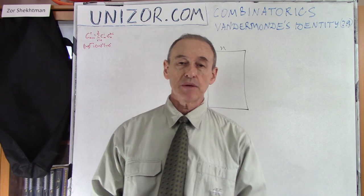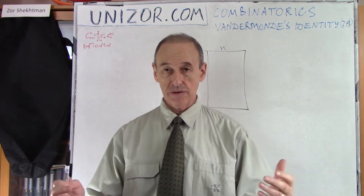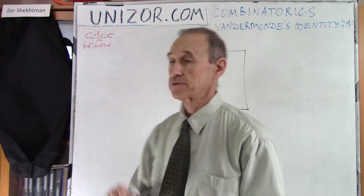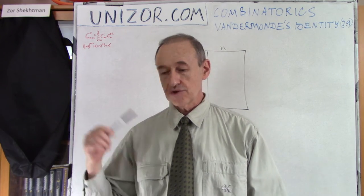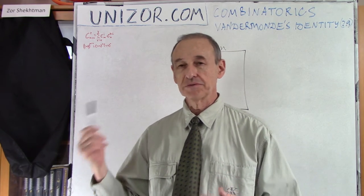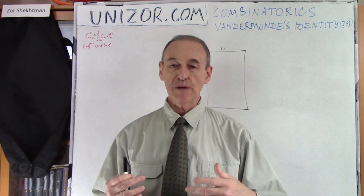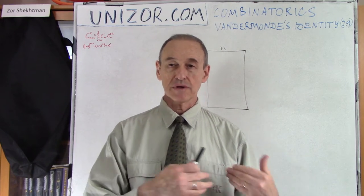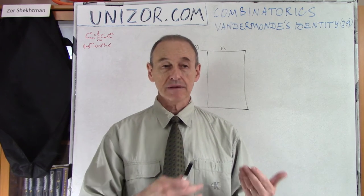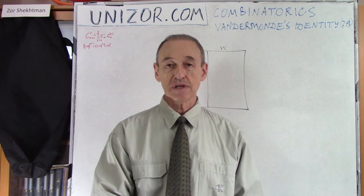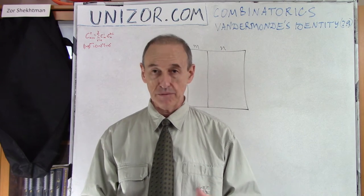Sometimes it's presented like this. Here is the identity. Just looking at the identity, you don't really feel the combinatorial sense behind it. So I would rather start from the meaning of that as an example of a practical problem. Basically, the solution to this would be actually the proof of the identity itself. And then I will offer another proof.